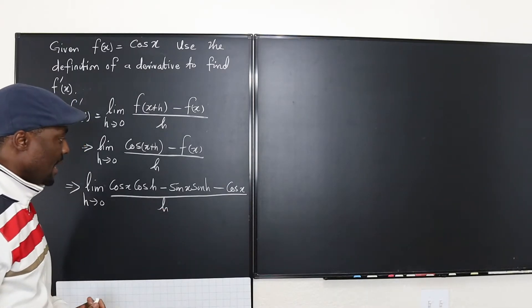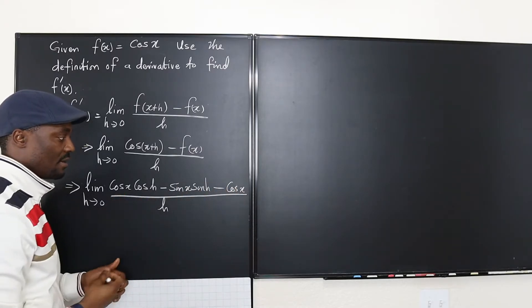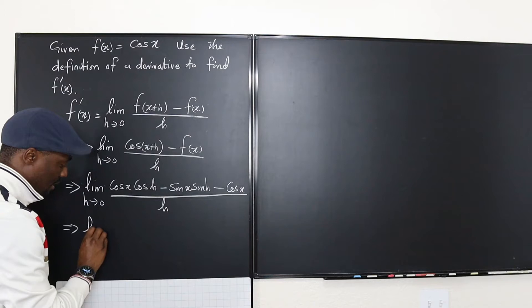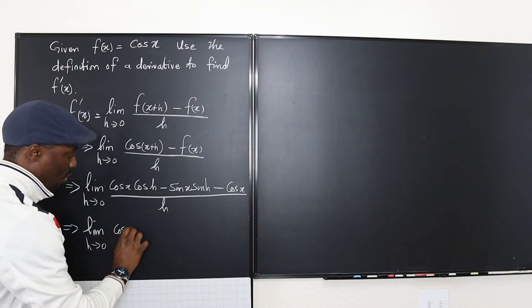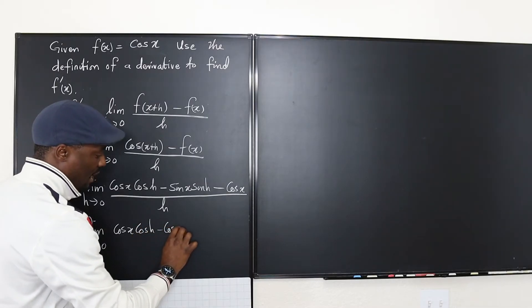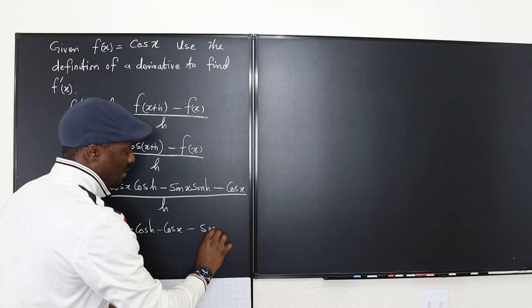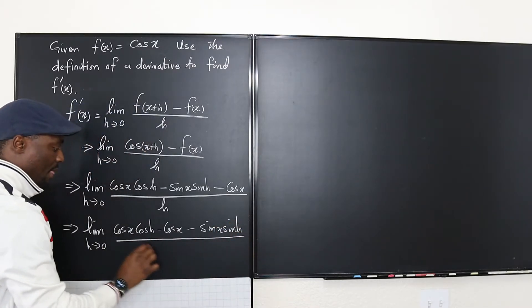Okay and all of this will be divided by h. So what we could do is move cosines, the two terms that contain cosines together and we're gonna have this to be the limit as h goes to zero of cosine x cosine h minus cosine x then minus sine x sine h over h.